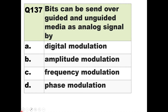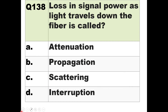Question 137: Bits can be sent over guided and unguided media as analog signals by what — digital modulation, amplitude modulation, frequency modulation, or phase modulation? In digital modulation such as ASK, PSK, and FSK, binary bits modulate a high-frequency carrier by changing its amplitude, frequency, or phase respectively. So bits can be sent as analog signals by digital modulation.